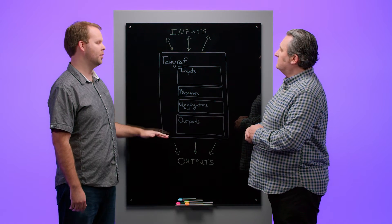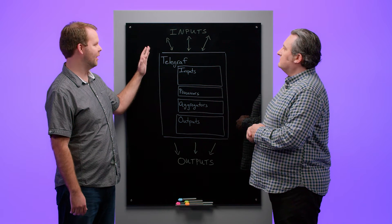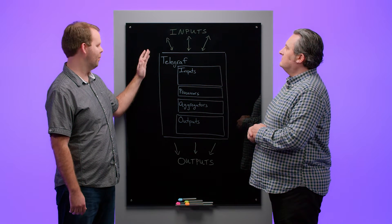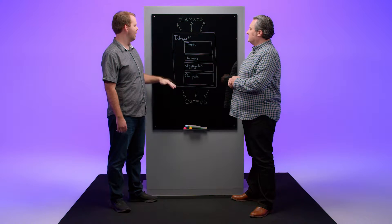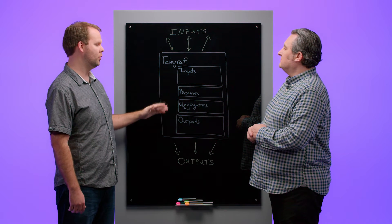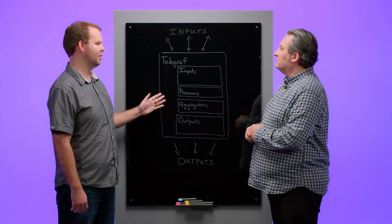Getting started with Telegraph, there are loads of plugins. Telegraph has hundreds of plugins to choose from and even more configuration options. At the heart of it, there are four different types of plugins: inputs that reach out to various sources to collect metrics and data, outputs that send those collected metrics, and processors and aggregators that are used to modify, customize, and aggregate those metrics.